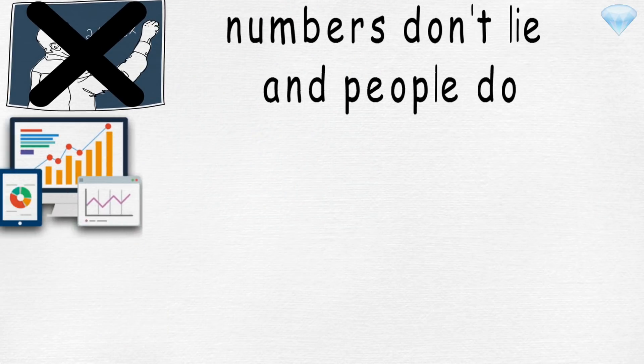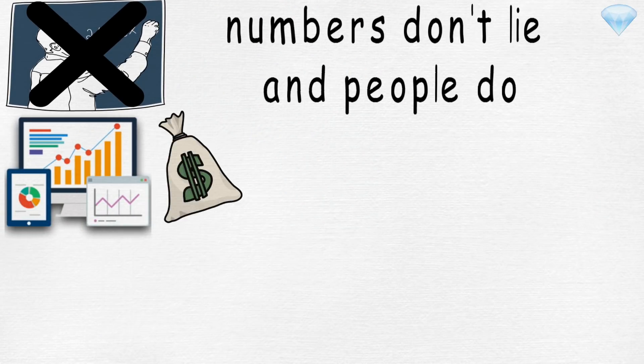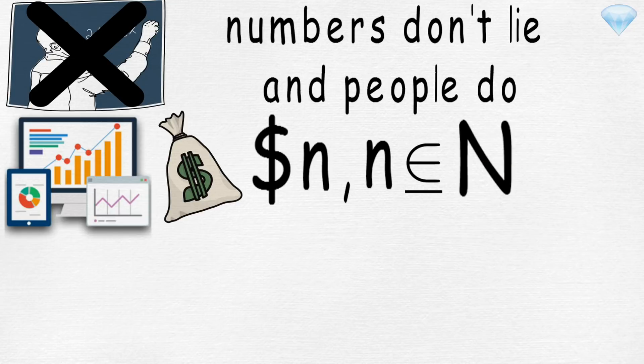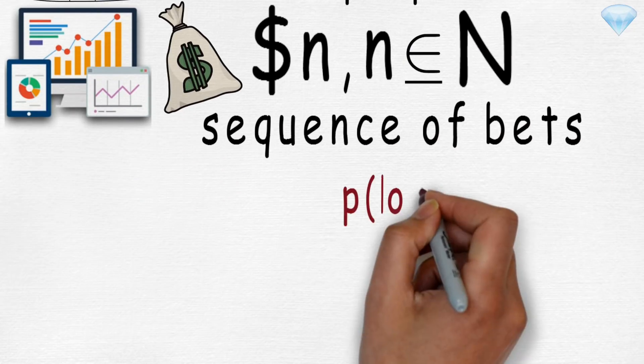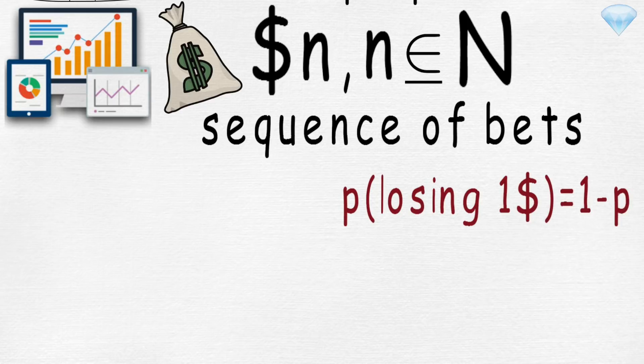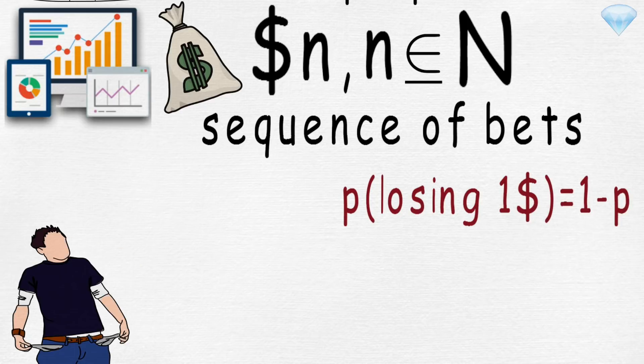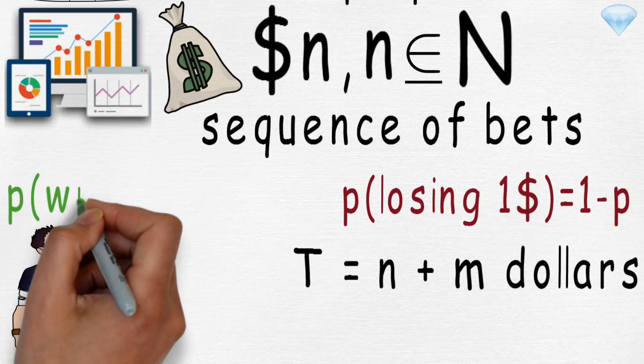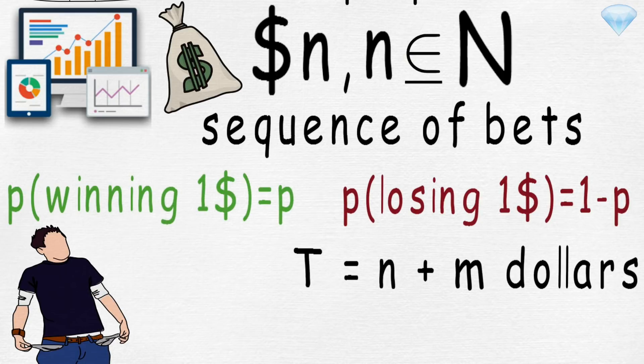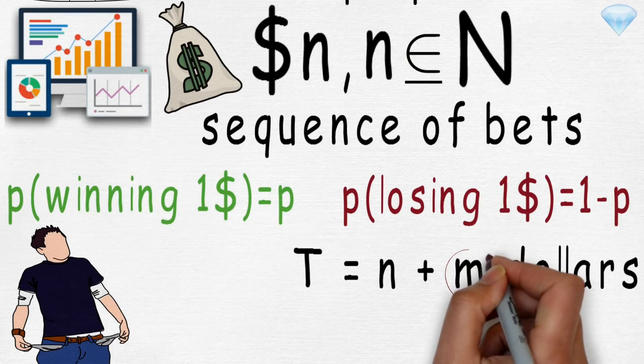So when we day trade, we need money, right? Suppose we start with n dollars, where n is just a natural number. And we make a sequence of bets. For each bet, we will win one dollar with probability p and lose one dollar with probability 1-p. We quit if we go broke, in which case we lose, or when we reach t equal n+m dollars, that is, when we win m amount of dollars.